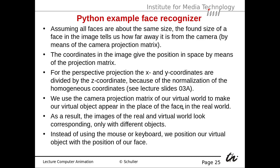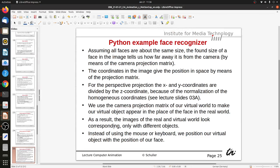We use the camera projection matrix of our virtual world to make our virtual object appear in place of the face in the real world. So from a camera image, we compute the position in the real world, then map this position into a virtual world where we have, for instance, a cube, and we replace the face with the cube in the same position. Or we could use the head to control the position of the cube — the cube acts as an avatar of the face. As a result, the images of the real and virtual world look corresponding, just with different objects.